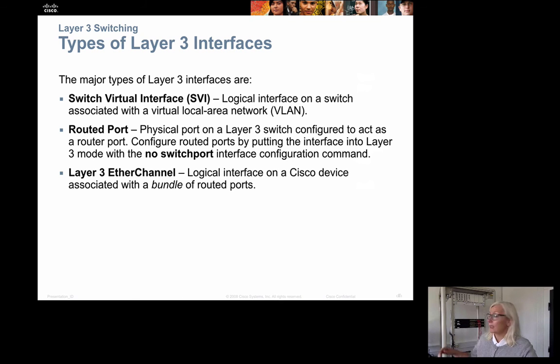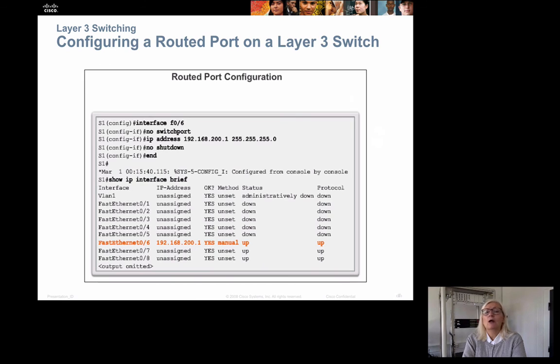Then we have the routed port, which is where we can go in and say that this here now is not a normal switch port. It is a routed port instead. So it can be configured to operate on layer 3 as well. And we can also create layer 3 ether channels. An ether channel is where I bundle, for instance, these three ports to work as one. So this is now instead of three 100 megabit connections, this is now a 300 megabit connection. So we can bundle the routed ports also, if we want that. We can go in and change the different ports. Like in this example here, we go to port number 6 and say that this is no switch port. Which makes it a routed port and then I give it an IP address and a no shutdown. And then I have this port now being a routed port instead of just a normal switch port.